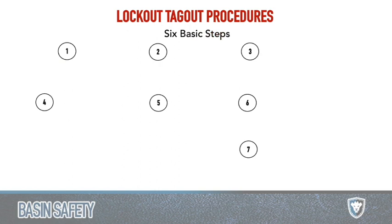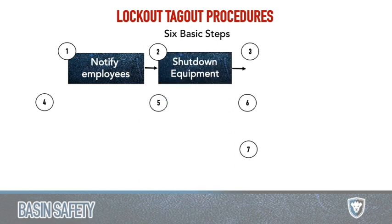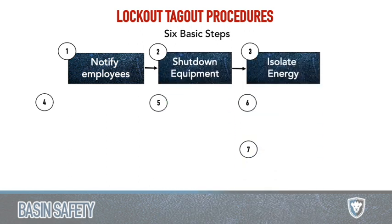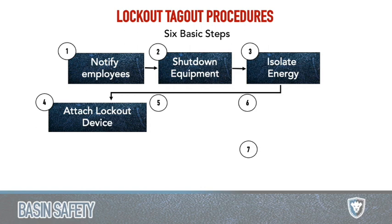There are seven basic steps. Six steps to the process, then the seventh is performing the maintenance. Step one: notify employees. Step two: shut the equipment down. Step three: isolate the energy — let everyone know, then hit the power button to shut it off. Isolating energy typically means throwing a knife switch, tripping the knife throw, disconnecting the circuit, pulling the breaker. Step four: attach the lockout device. We've already completed three steps before we even attach the lock.